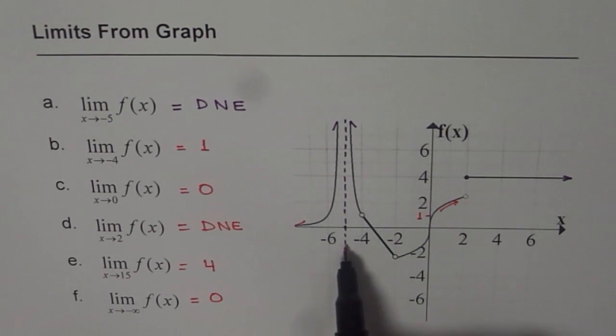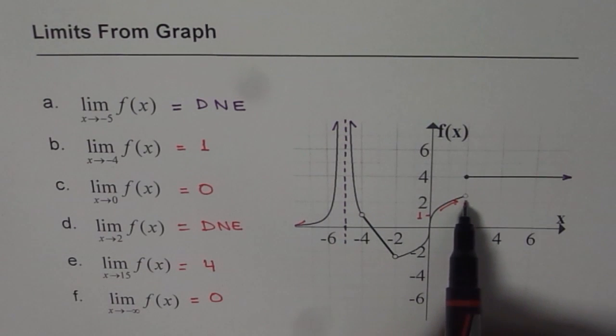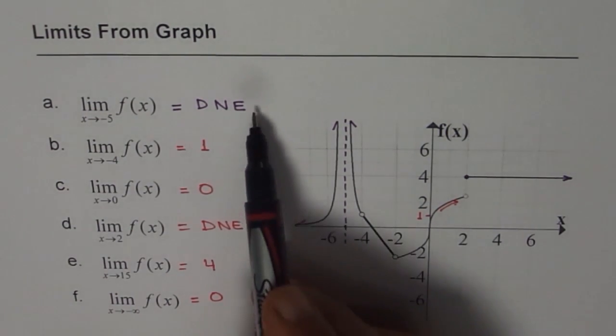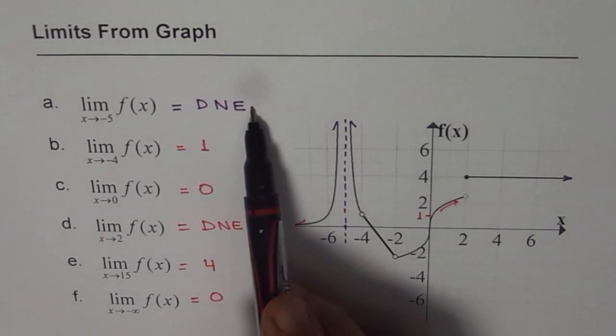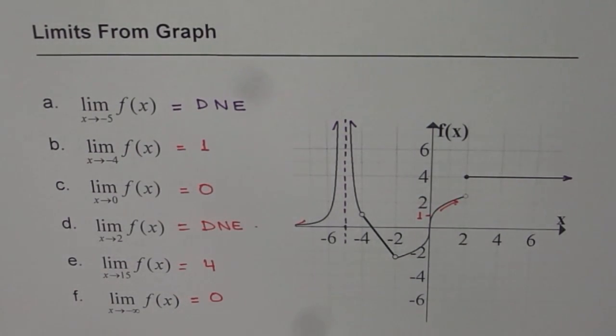But if you have a vertical asymptote or a jump type of discontinuity, then the limit does not exist. So these two discontinuities are because of vertical asymptote and jump, and therefore the limit does not exist at these discontinuities.